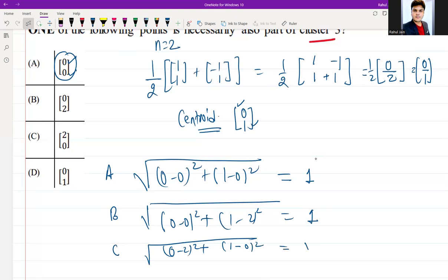It is 2 squared which is 4 plus 1, that is square root of 5. And then option D: if you calculate the Euclidean distance (0-0)² plus (1-1)², so I am getting 0 here.